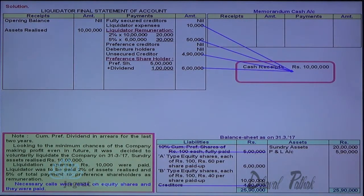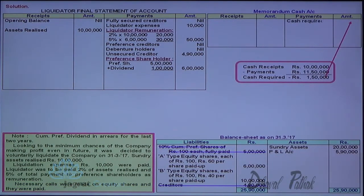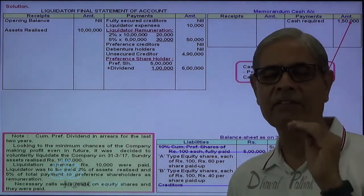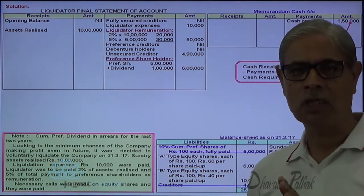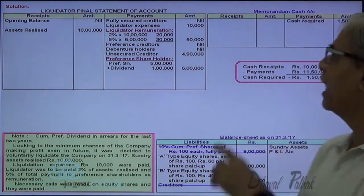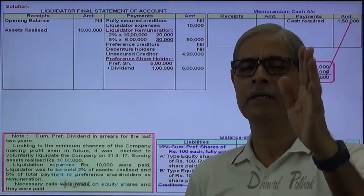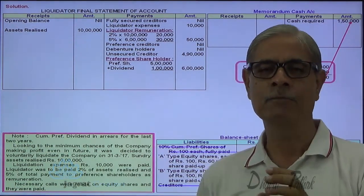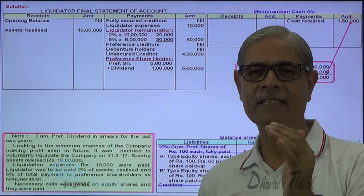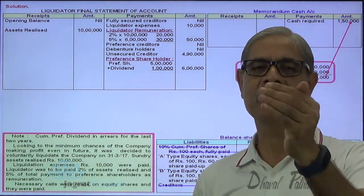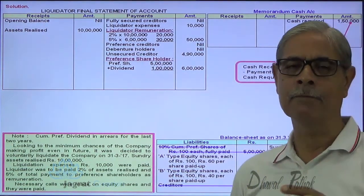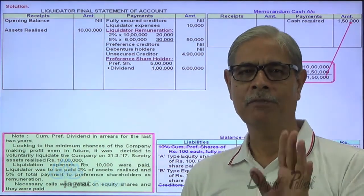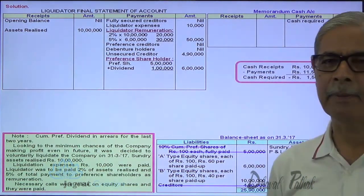With 10 lakhs available and total payments required of 11 lakhs 50,000, cash required is 1 lakh 50,000. To meet this, we demand the last call — the entire unpaid amount — from all shareholders. After meeting the deficit, any surplus will be refunded to shareholders. This is the hypothetical notion with which the calculation starts: the entire last call is demanded from all shareholders, the deficit is met, and the surplus is refunded.